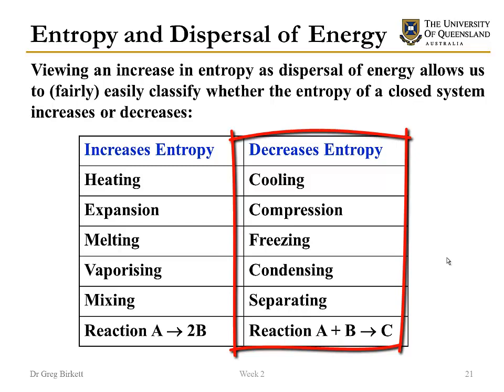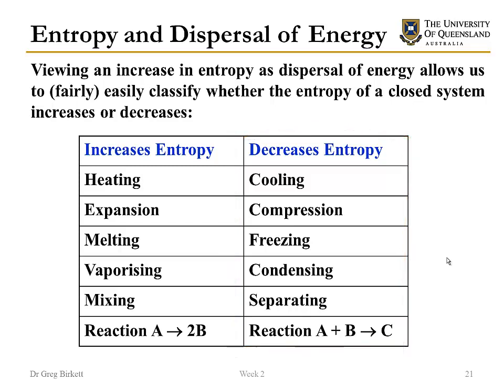On the right hand side we have things that decrease the entropy of the system. If you cool anything, compress anything, freeze anything, condense it from a gas to a liquid, separate it — taking our mixed A and B and separating into pure A and pure B — or if you have a reaction where A plus B goes to C, all of these things will decrease the entropy of that system, concentrating the energy in a more confined space.